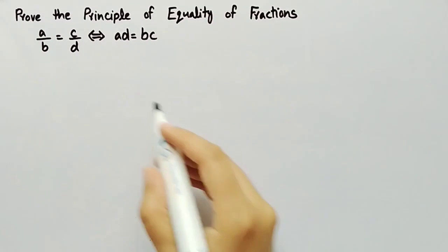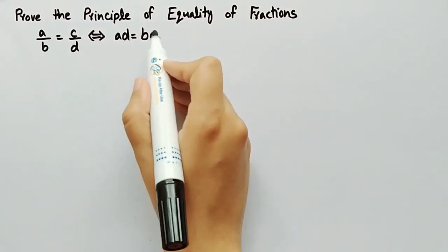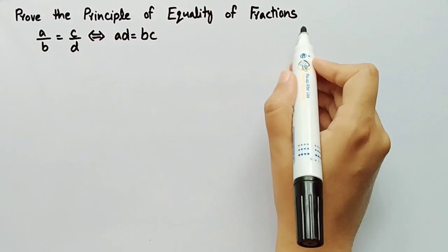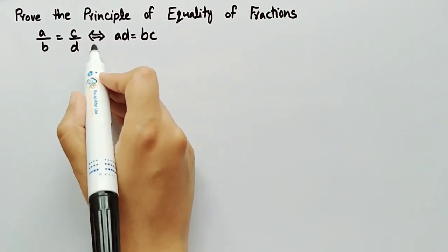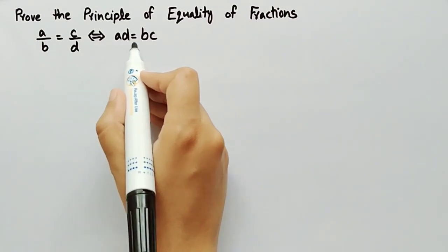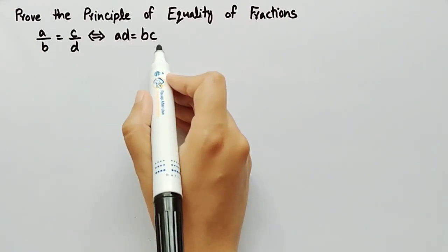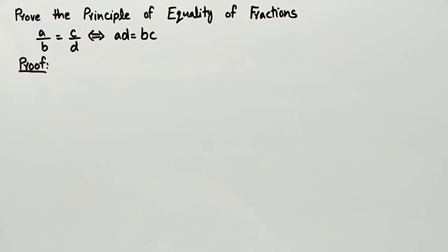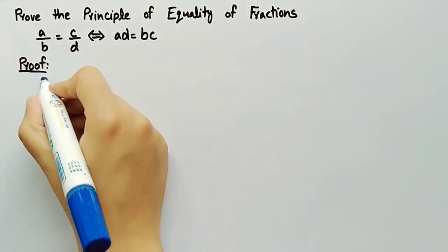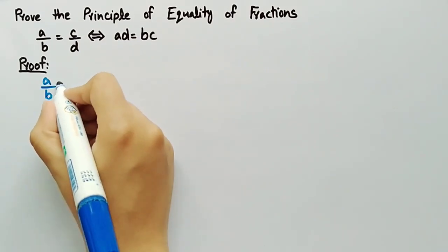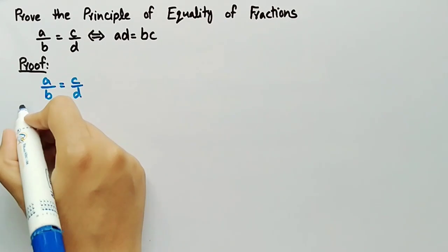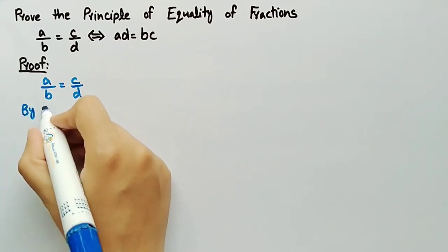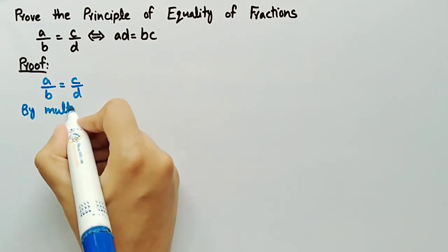In this video we will prove the principle of equality of fractions: a/b = c/d if and only if the product a·d is equal to the product b·c. Now coming towards its proof, it is given that a/b = c/d. By using the multiplicative property,